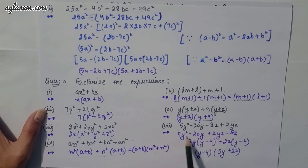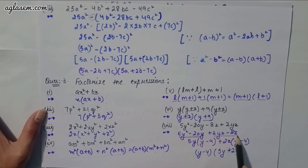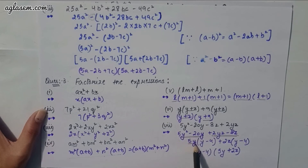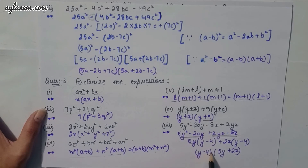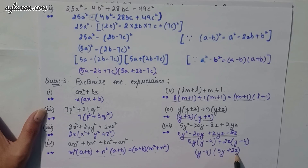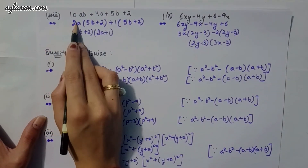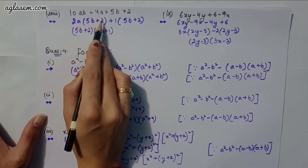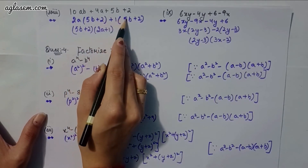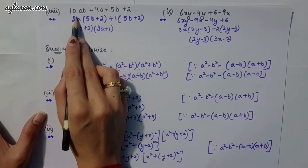Seventh part: 5y² − 20y + 2yz − 8z. Rearrange as 5y² − 20y + 2yz − 8z. Take 5y common from first two and 2z from last two: 5y(y − 4) + 2z(y − 4) = (y − 4)(5y + 2z).